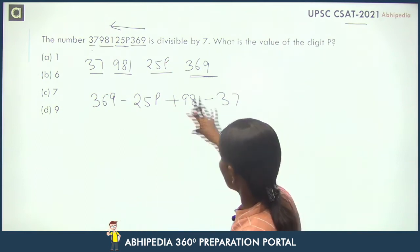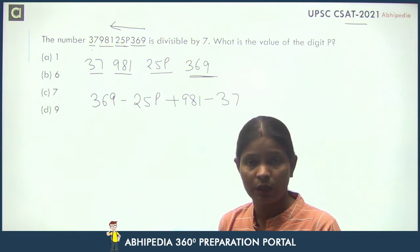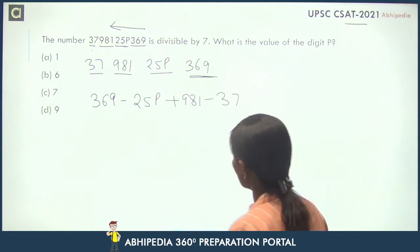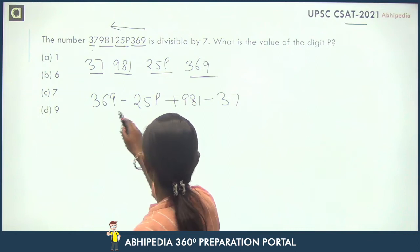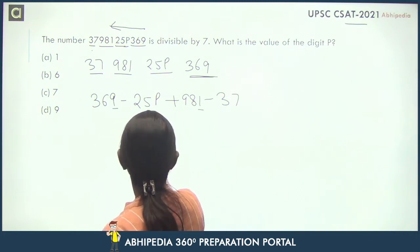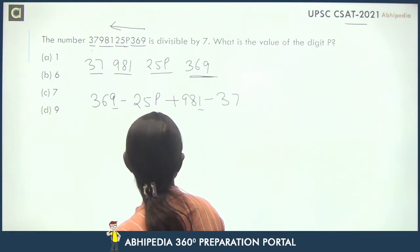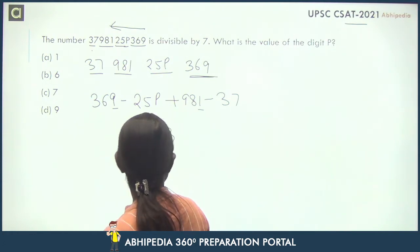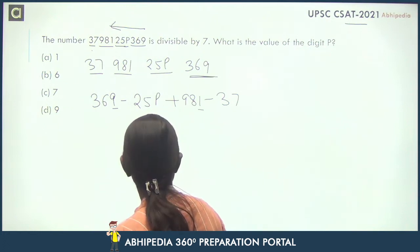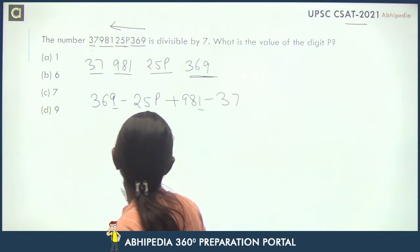Now when we solve this, we have to see if the number is divisible by 7. When we solve this, we get: 369 minus 25P plus 981 minus 37 equals 1313 minus 25P.